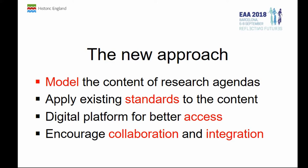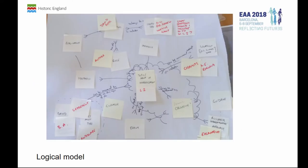The new approach we're taking is shown here: we're going to model the contents of those traditional publications, apply some of the standards that we've already discussed, and create a digital platform so that it's easy to update and maintain that essential knowledge. We also want to encourage collaboration in the development of these research frameworks. The sticky notes represent things you can record information about, and the lines between them show how they relate to each other — a technique for capturing thinking, for example, how an individual research question relates to the themes in a research framework. It's helped us in our design of the work that we've started.